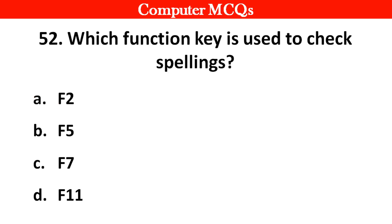Next question: Which function key is used to check spelling? Options A. F2, B. F5, C. F7, D. F11. Right answer is option C: F7.